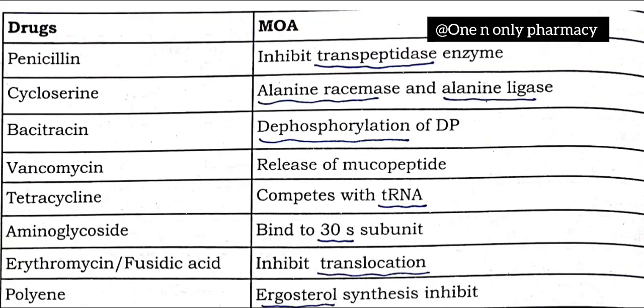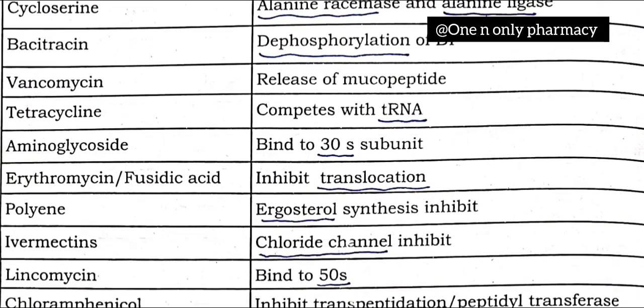Cycloserine's mechanism of action: it inhibits L-alanine racemase and L-alanine ligase enzymes. Third, bacitracin inhibits dephosphorylation. Fourth, vancomycin inhibits the release of mucopeptide and inhibits microorganism growth.